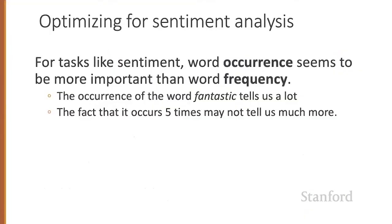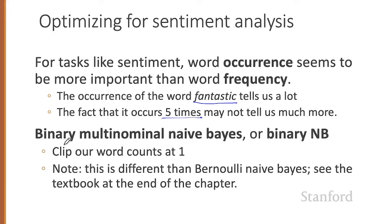Now, it turns out that for tasks like sentiment, the occurrence of a word seems to be more important than its frequency. In other words, if we see the word fantastic, that tells us a lot about how the user feels about the movie. But the fact that it occurs five times may not tell us that much more than its original occurrence. And we take advantage of this intuition with an algorithm called binary multinomial naive Bayes. And we'll just call it binary naive Bayes for short. And the algorithm is very simple. Inside each document, we clip our word counts at one. So if a word occurs twice in the document, we just pretend it occurred once. And I want to point out, this is different than a similar algorithm called Bernoulli naive Bayes, which is not generally used for text classification. It's used when naive Bayes is applied to other situations. And you can see more about that in the textbook at the end of the chapter.